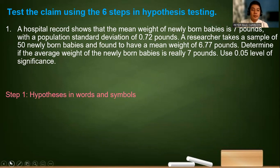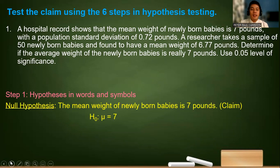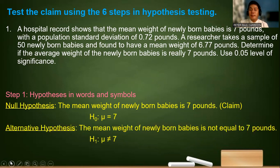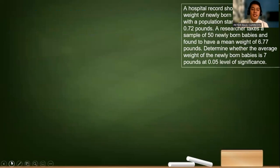So let us list the given. First, we use the hypothesis in words and symbols. The mean weight of the newly born babies is 7. So that is the claim that is mu is equal to 7. For the alternative hypothesis, again, this is two-tailed. The mean weight of the newly born babies is not equal to 7 pounds. So we will now test the null hypothesis.